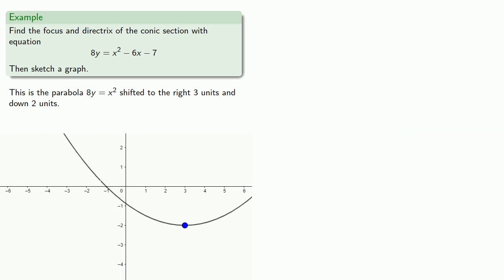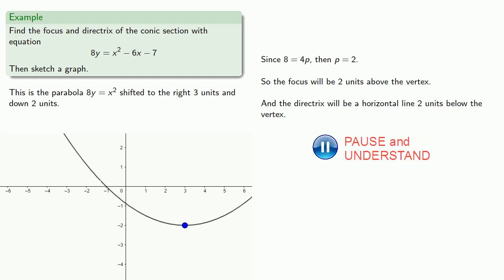Remember that the coefficient of y is 4p, so p equals 2. This tells us that the focus will be located 2 units above the vertex, and the directrix will be a horizontal line 2 units below the vertex. If we take our parabola and shift it right 3 units and down 2 units, this will place our focus at (3, 0) and the directrix at y = -4.